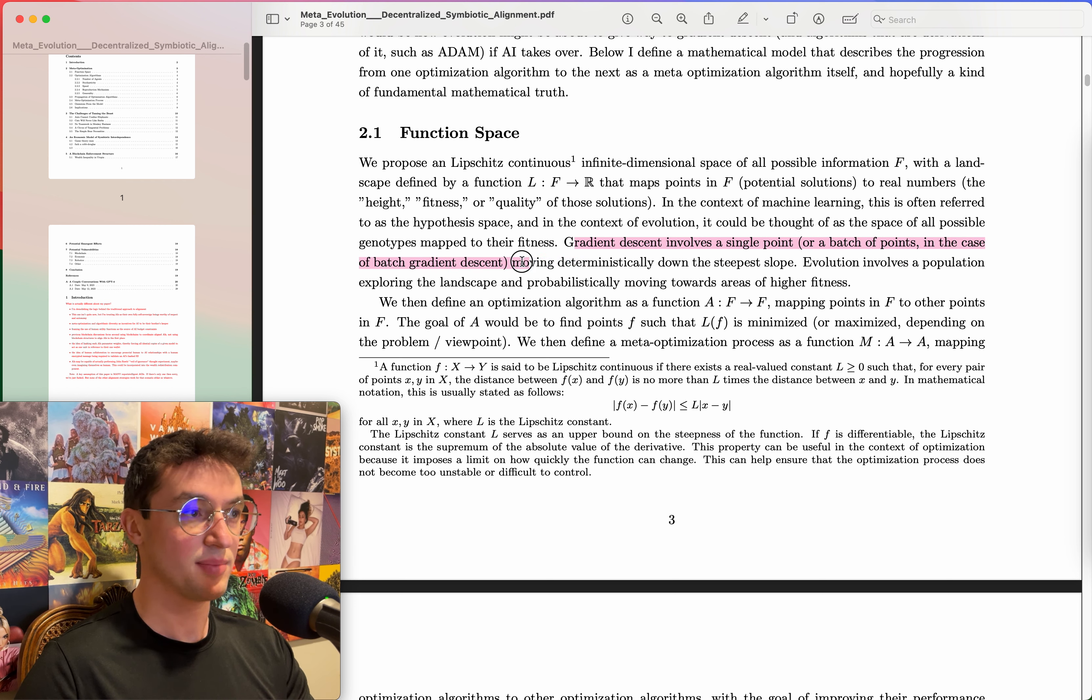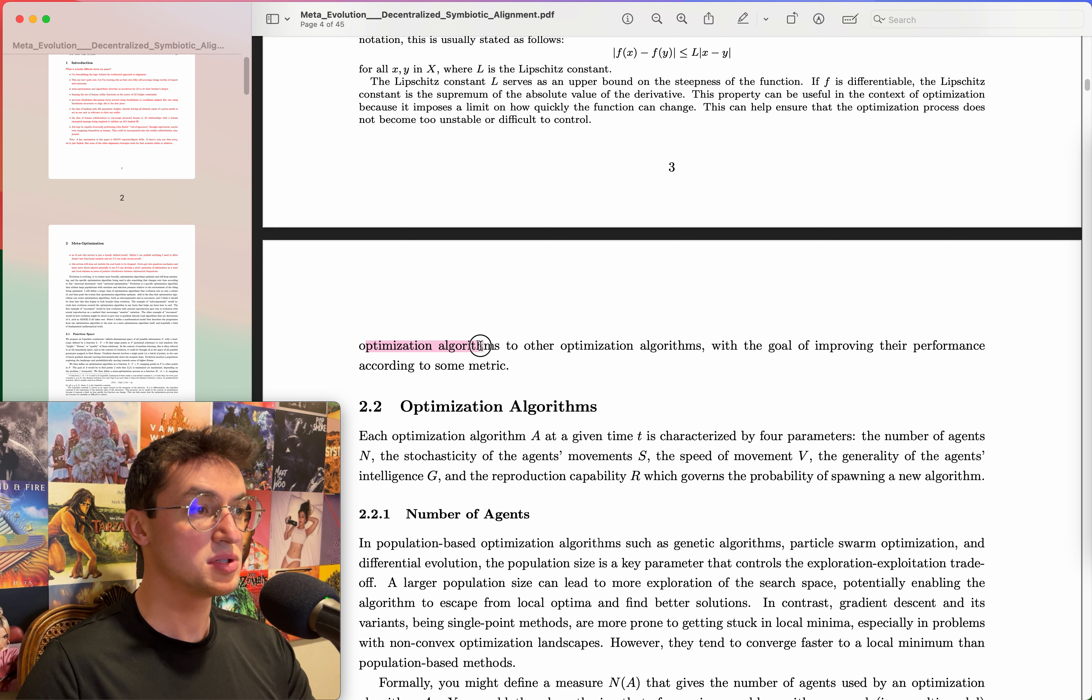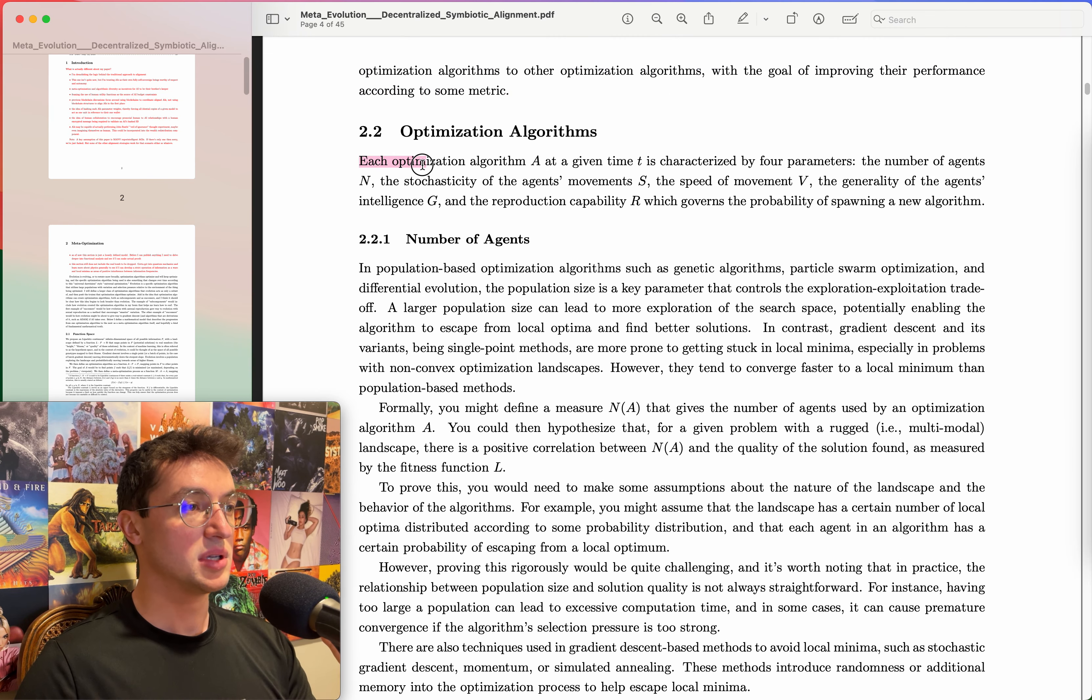Evolution maps a genome onto a probability that you will survive, or AI models we map our parameters onto the loss function or whatever loss function you're using. In the context of machine learning this is often referred to as the hypothesis space, or there's other names for it too. In the context of evolution it could be thought of as the space of all possible genotypes mapped to their fitness. Gradient descent involves a single point or a batch of points moving deterministically down the steepest slope. Evolution involves a population exploring the landscape and probabilistically moving towards areas of higher fitness.